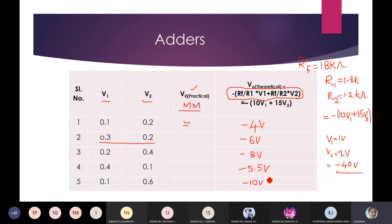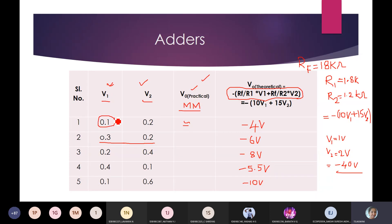This is what you need to do in the lab — measure across pin 6 by providing V1 and V2 using two different power supplies. Set the voltage values accurately using a multimeter from the regulated DC supply, then measure the output with the multimeter.